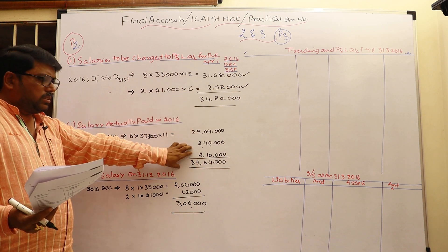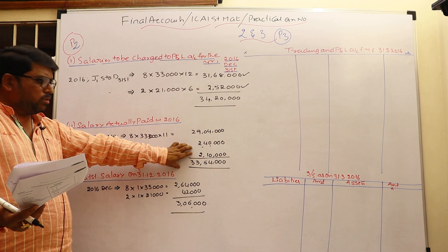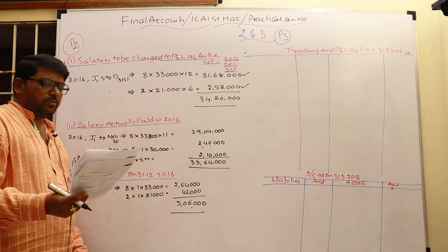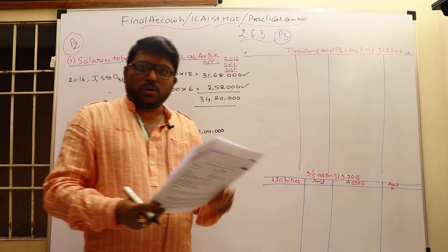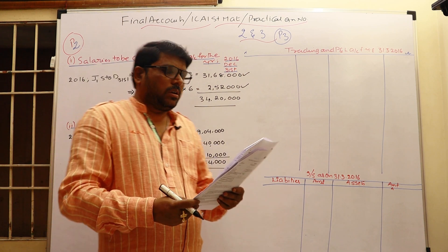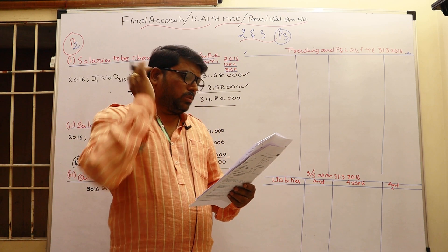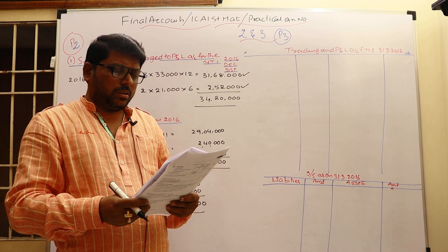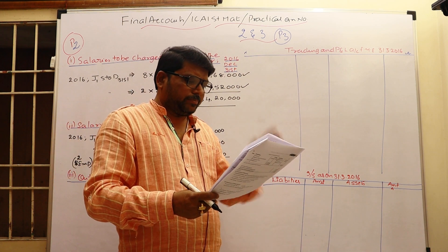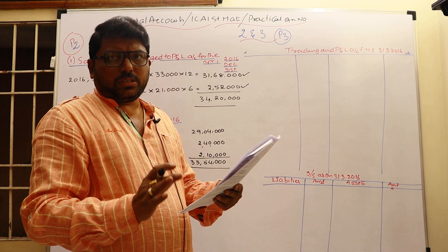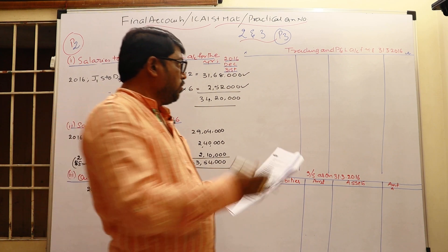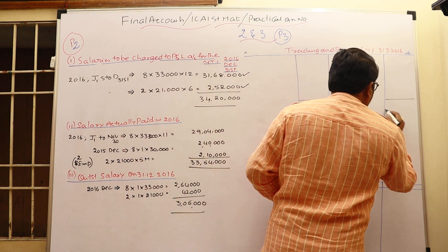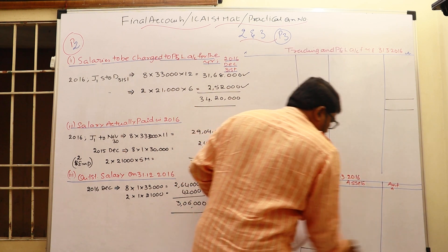This is what we charge to P&L as salary; this is what was actually paid during 2016; and this is the outstanding salary of ₹3,06,000. Very simple to work out. Now let us come to question number three. By the given particulars you have to prepare a trading P&L account as well as balance sheet. There are no adjustments — simply use the given data to work out the trading P&L and balance sheet.